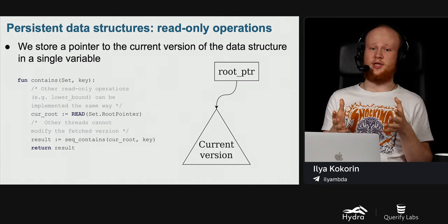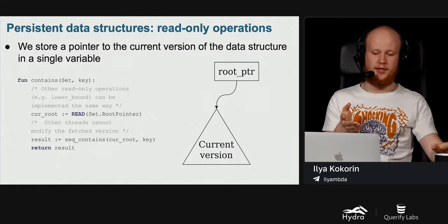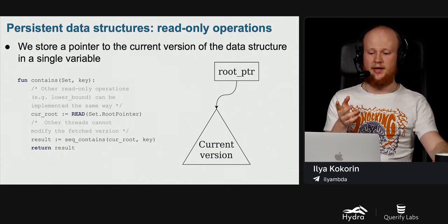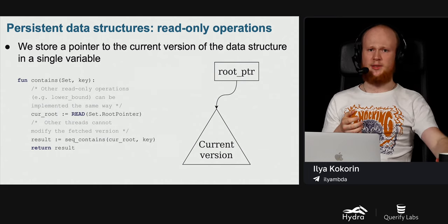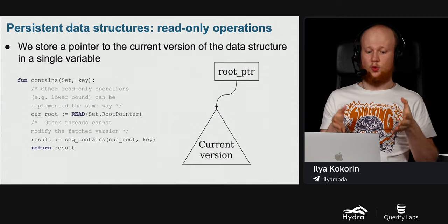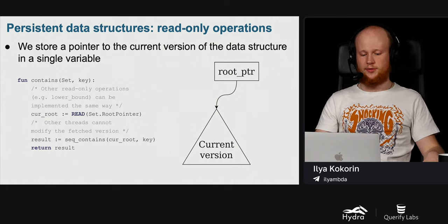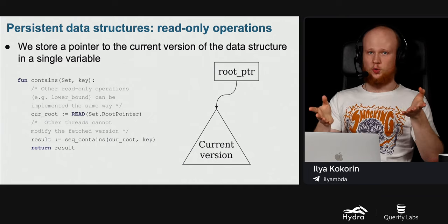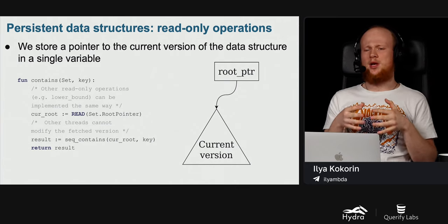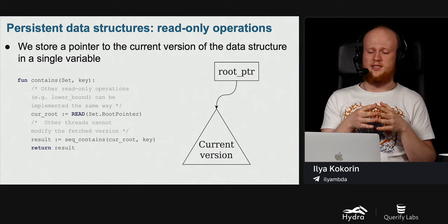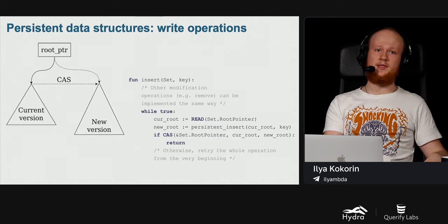We can store the whole database in a collection of persistent trees — tables, indexes, and everything. We store a pointer to the current version of the data structure in a single variable. For read-only queries: first we acquire the current version by reading the root pointer, then we can execute arbitrary read-only logic on the acquired version. Because our data structure is persistent, we don't have to worry that some other transaction will modify the database and cause inconsistent views.